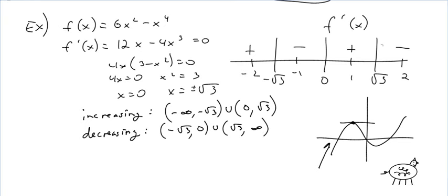Decreasing between negative root 3 and 0, union root 3, infinity. That's it. It's pretty easy. Right, math fans? Alright, I know I'm not going to show you another example, but I want to point something out here.